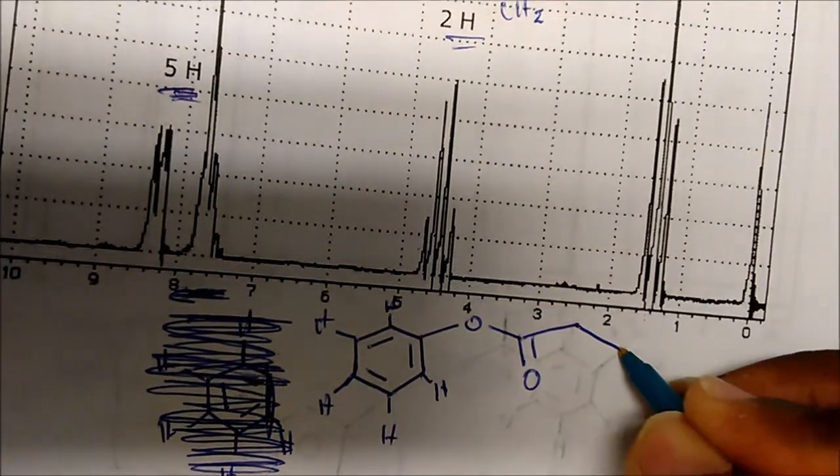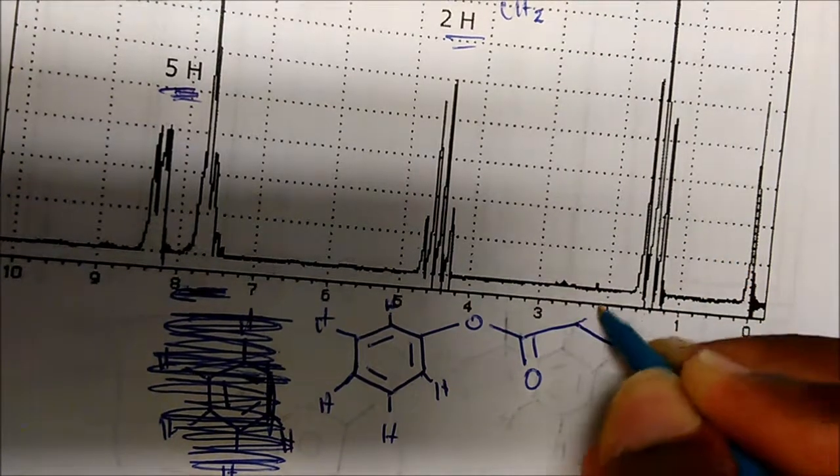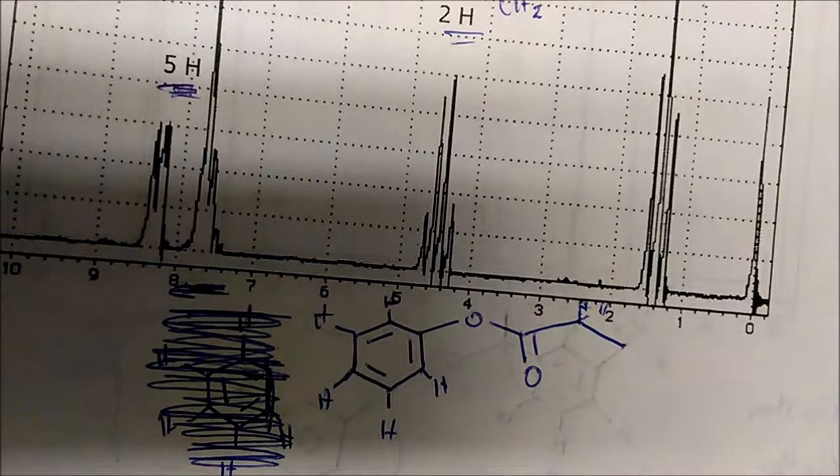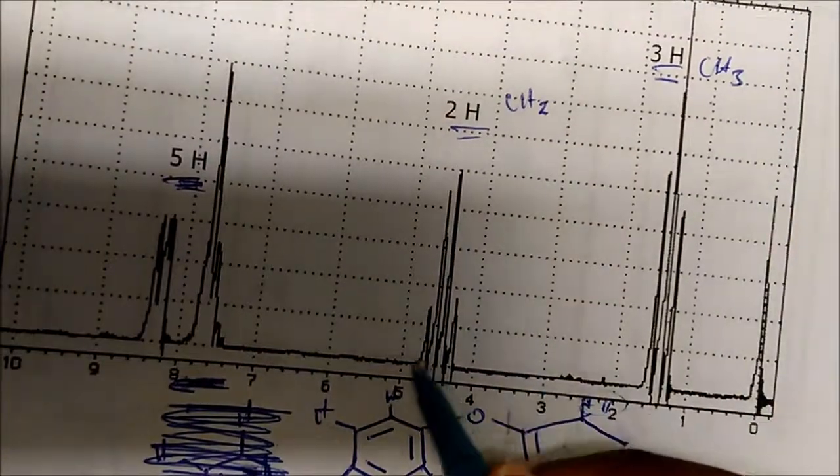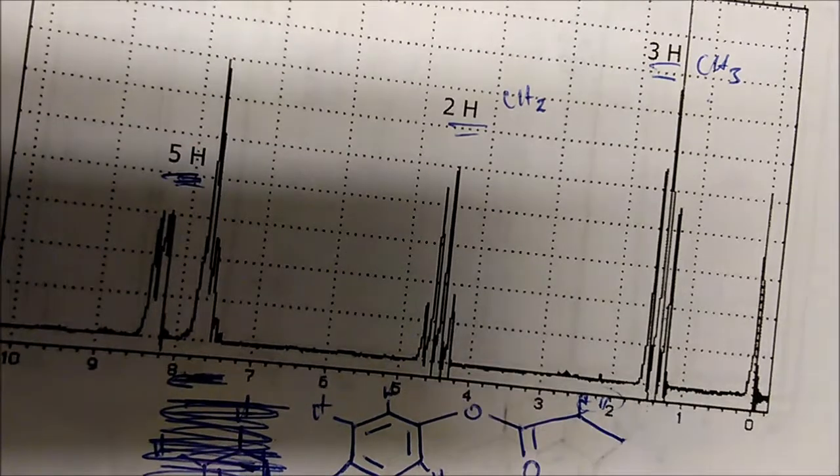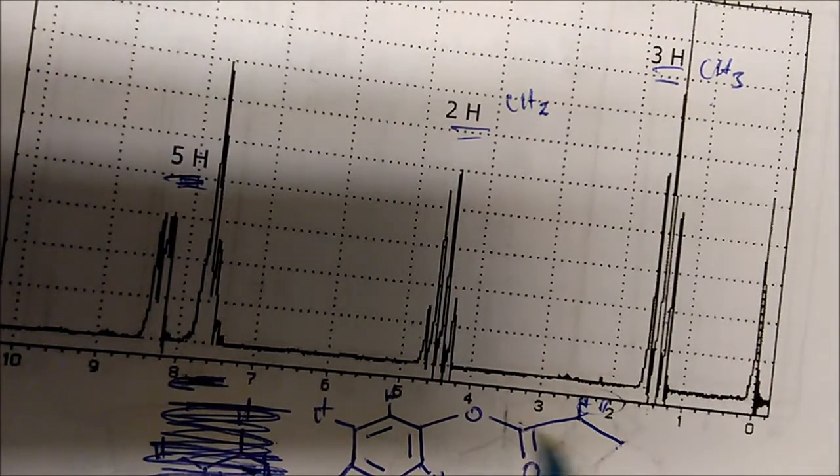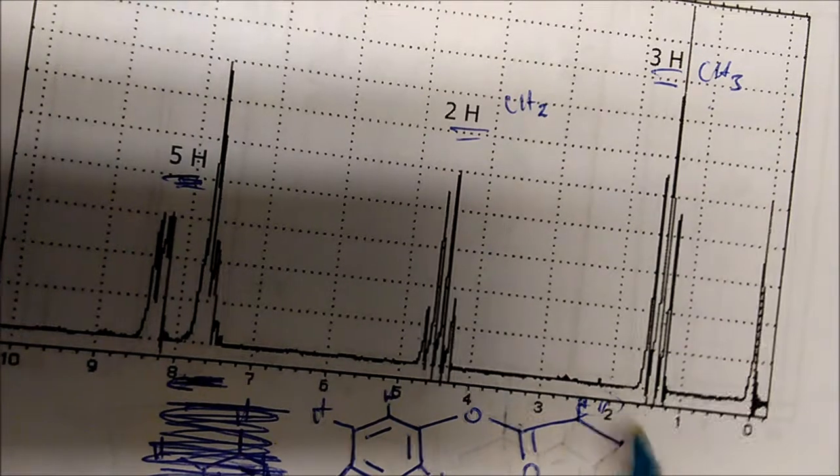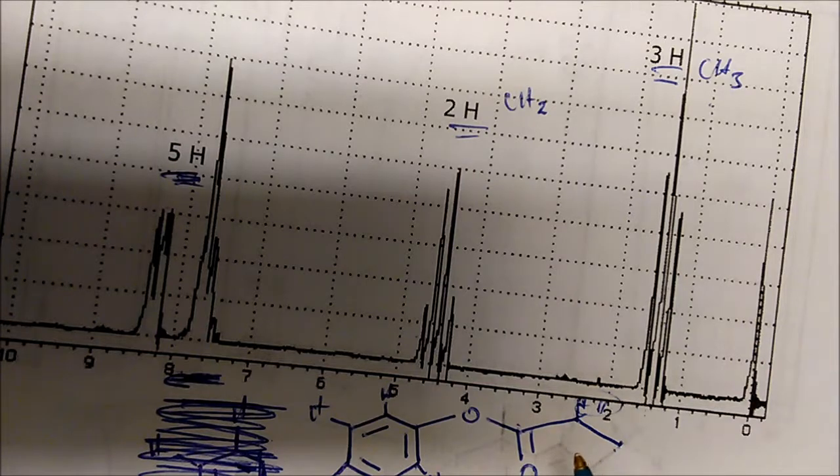Again, we have a CH3 here that splits one, two, three times. So therefore, it only has to have two neighbors - one, two protons. These CH2 here splits how many times? One, two, three, four. Well, how many neighbors does it have? It doesn't have any neighbors here, but it has three here. So three plus one is four. And indeed, we see a quartet here. So indeed, this is the structural formula for the molecule.